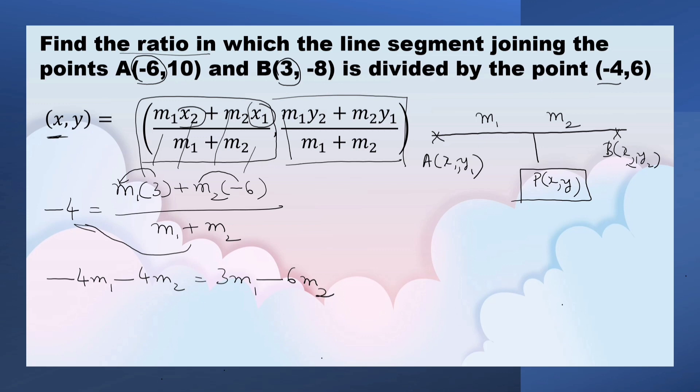Now, let us collect M1 in one side. Transpose minus 4M1 to this side. 3M1, negative sign changes to positive 4M1. Now, negative of 6M2 is transposed to this side, 4M2, negative sign changes to positive, 6M2. So, 7M1 is equal to 2M2.